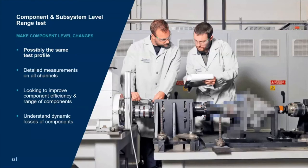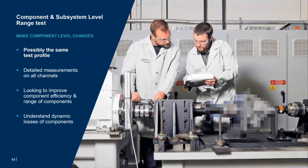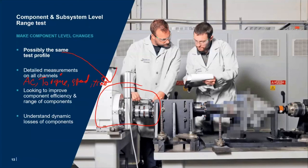Finally, the component level test. Once we've identified that a component uses a significant amount of energy, we want to make component level changes. Now we may not be on the chassis dynamometer, but on a direct drive dynamometer with precision instrumentation for torque, speed, voltage, current, and electrical energy consumption. We're looking at details now — not just DC but AC as well. We run the same test profile, make detailed measurements on all channels including AC, torque, speed, and temperature, and do a really detailed analysis to figure out how to improve component efficiency and range.